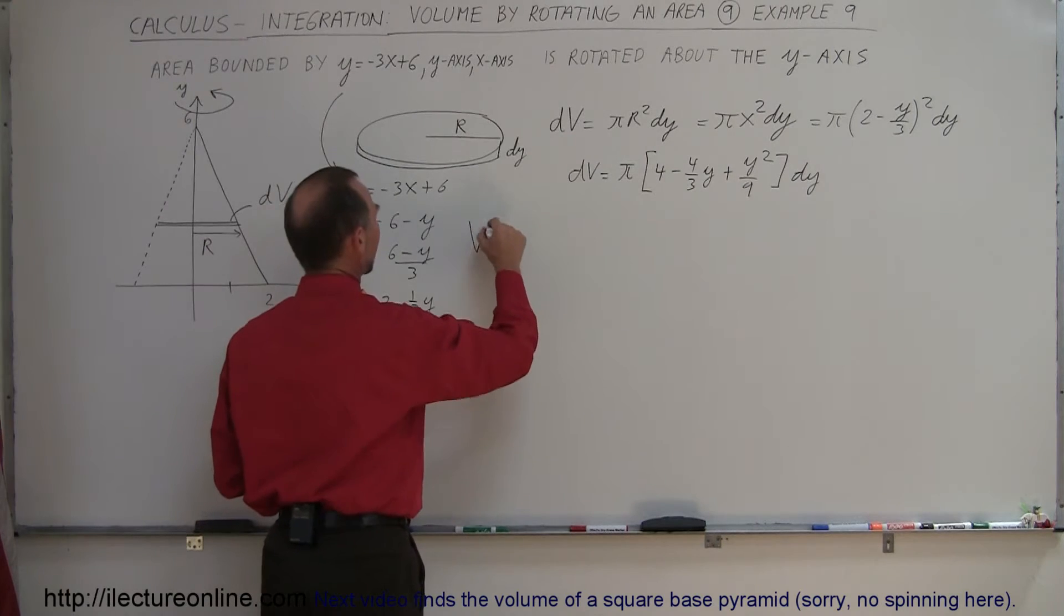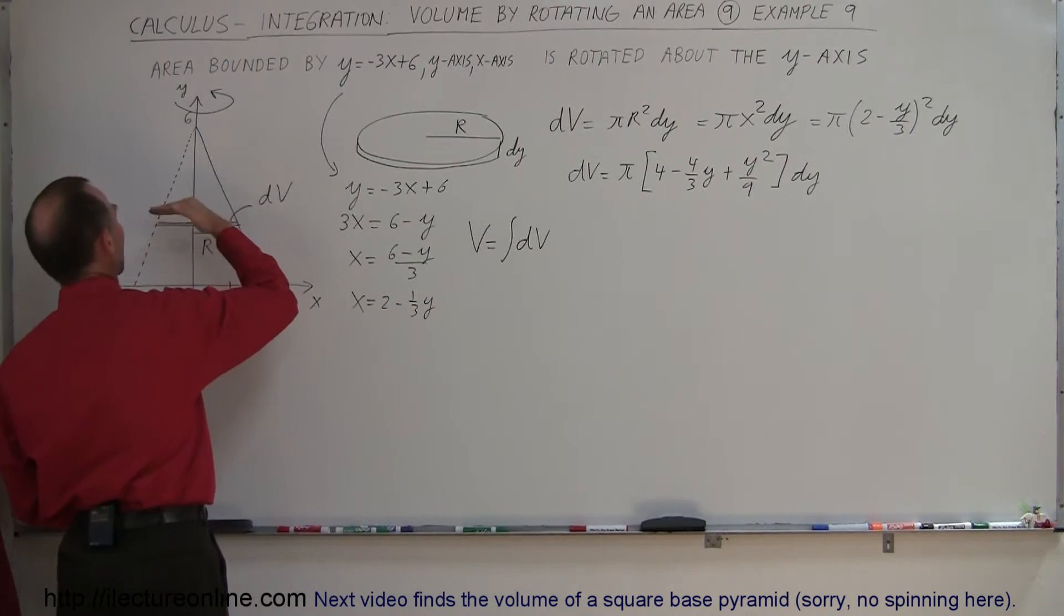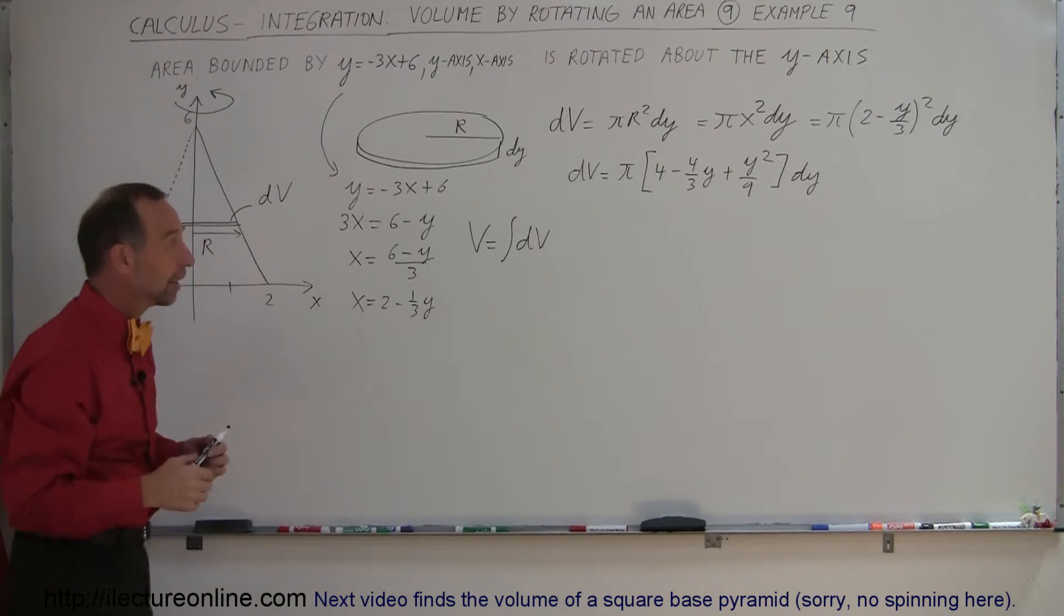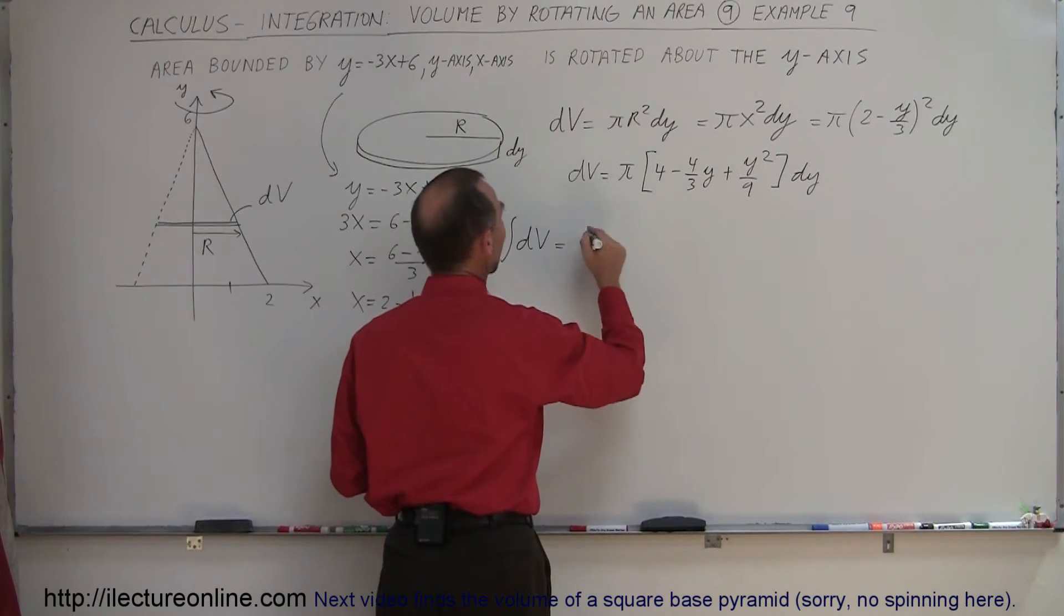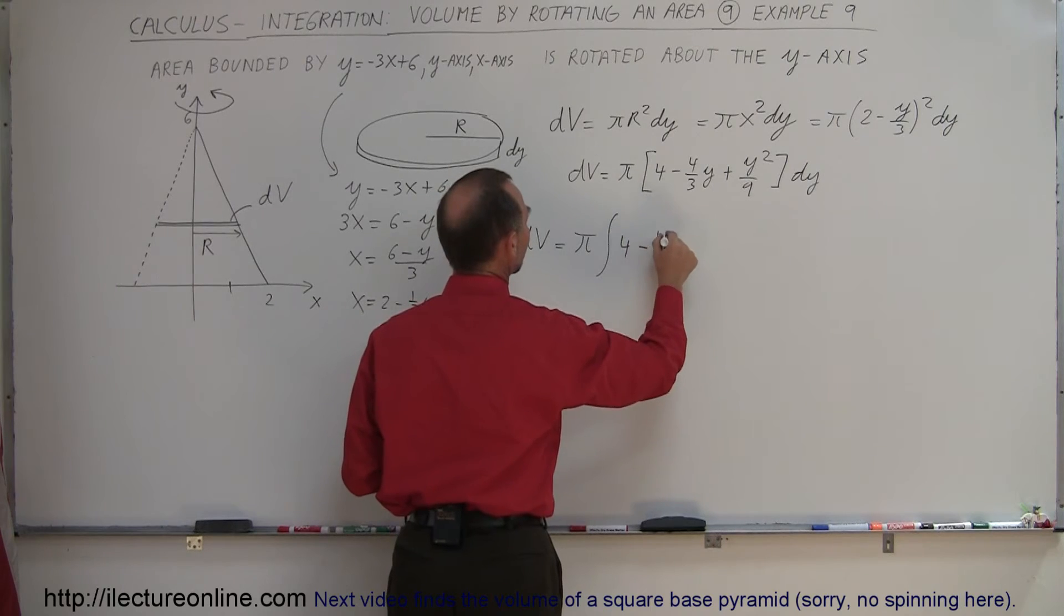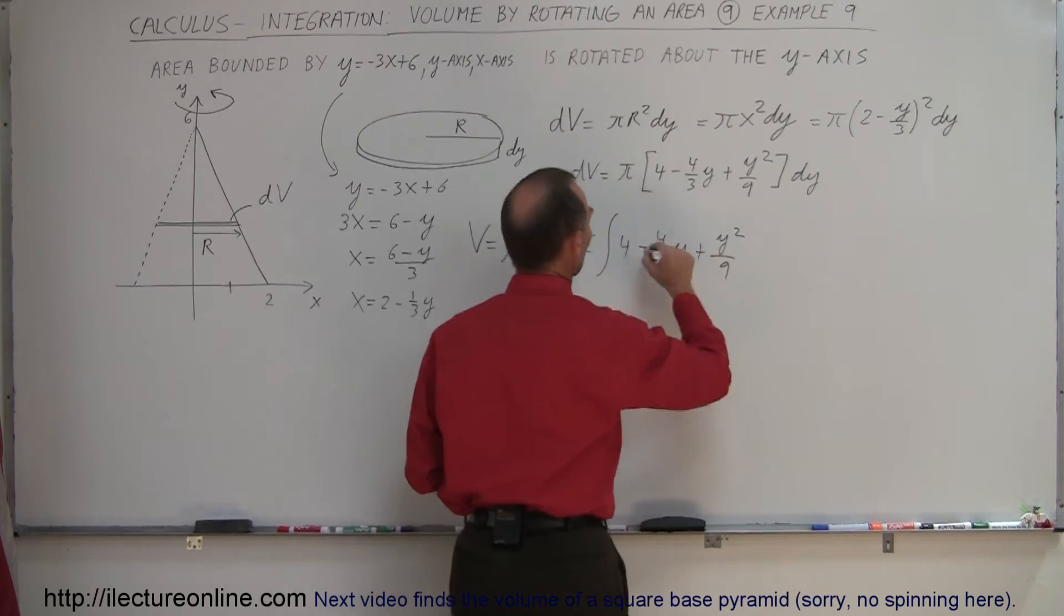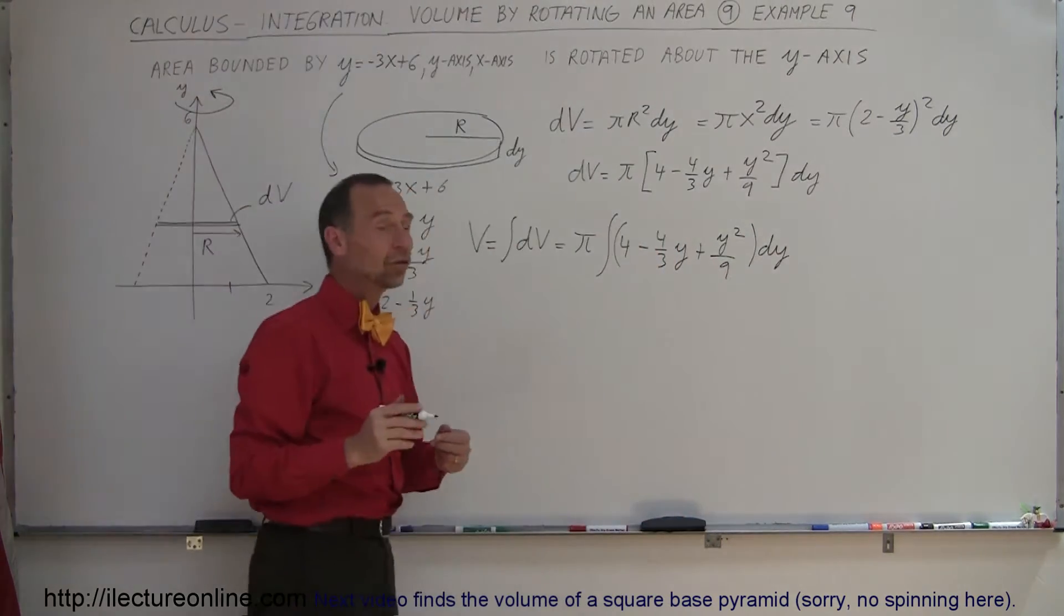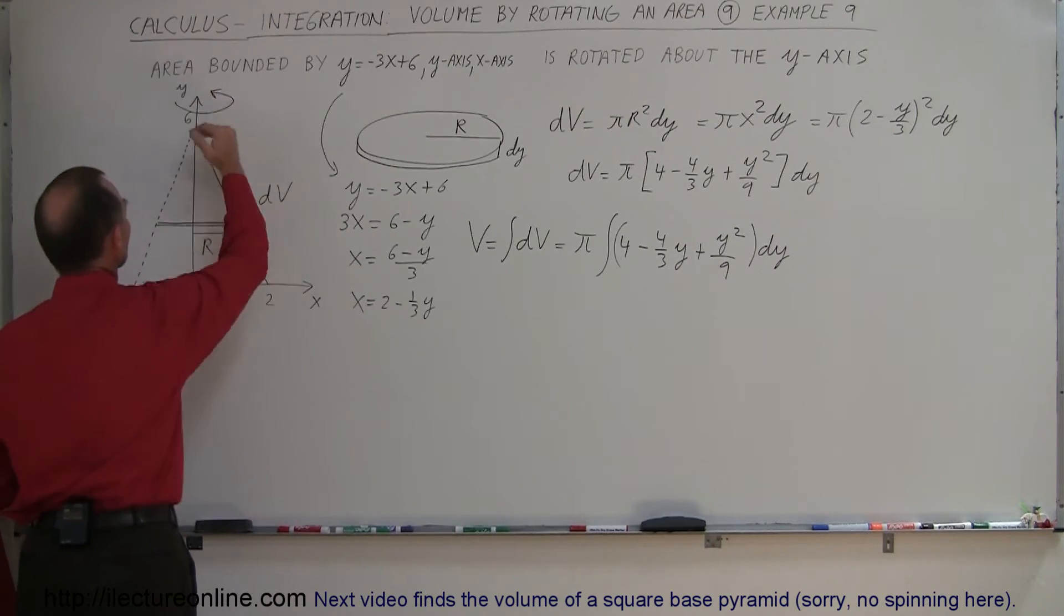Therefore I can say that the volume is equal to the integral of all the dv. So what we're going to do is slice this up in an infinite number of slices, add them all up, which is the definition of integration. And so that means that this is equal to, we take the π outside integral sign, π times the integral of 4 minus 4 thirds y plus y squared over 9, the whole thing multiplied times dy. And now I need my limits of integration. I'm going to integrate all the way from the bottom to the top of the cone, all the way from 0 to 6.